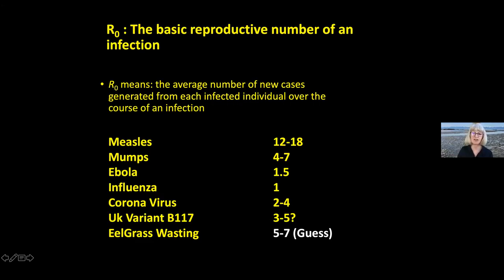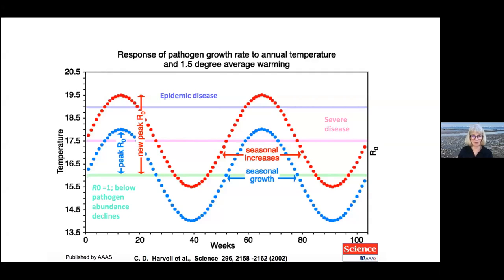Some of you are hearing about the new UK variant — this one worries me deeply because it has a much higher transmission rate, 50 to 70 percent higher. We're also trying to estimate R-naught for eelgrass wasting disease, and we think it's pretty infectious. We use this number in a key figure showing links between climate warming and infectious disease — published back in 2002.